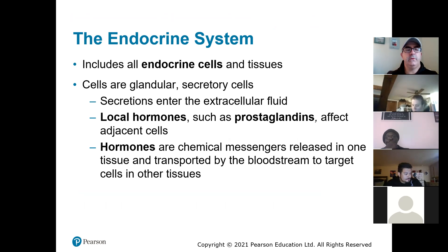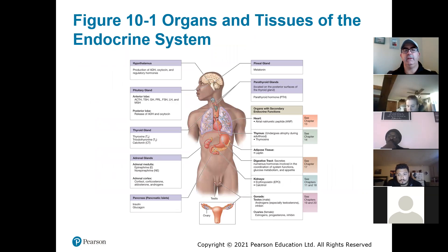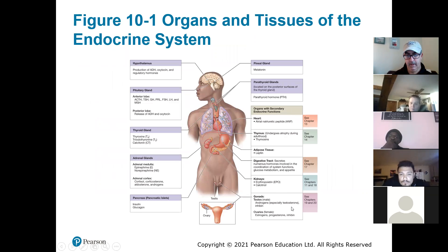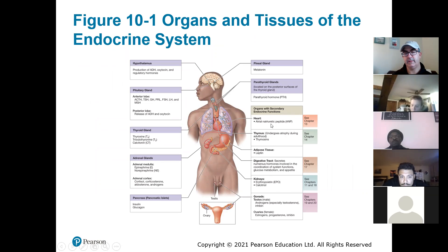The cells of the endocrine system are glandular — they secrete chemical messengers released into the bloodstream, transported to their target cells. Here's an overview of endocrine organs: the hypothalamus, pituitary, thyroid, adrenal, pancreas, pineal, and parathyroid glands. Some organs shown in gray have secondary endocrine functions — like the heart, which secretes a hormone called ANP, but whose primary function is to pump blood.